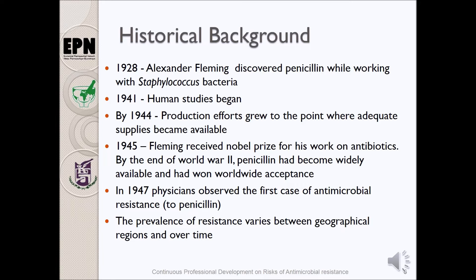Fleming received his Nobel Prize for his work on antibiotics in 1945, and by the end of World War II, penicillin had become widely available and had won worldwide acceptance. Two years after he received his Nobel Prize, physicians observed the first case of antimicrobial resistance to penicillin — six years after the human studies began — and the prevalence of resistance varied between geographical regions and over time.